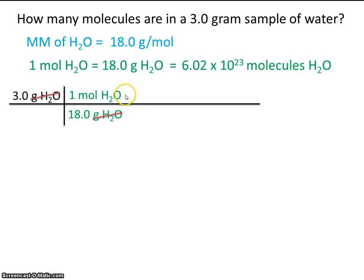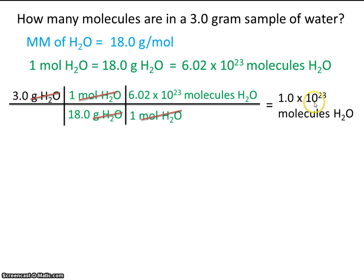So we can cancel out grams. Now the unit we're working with is moles. If we have moles in the numerator, we'll also need moles in the denominator. We know that 1 mole of water is equal to 6.02 times 10 to the 23rd molecules of water. So moles also cancel out. In your calculator, using the E button, you would do 3.0 times 6.02 times 10 to the 23rd divided by 18.0. Punch that in your calculator and make sure that you get 1.0 times 10 to the 23rd molecules of water.